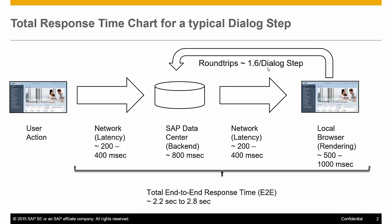For example, if it's a very short list it's one round trip; if it is a very long list, it can be multiple round trips. Which means the total end-to-end response time the user experiences is at least 200 milliseconds network latency, 800 milliseconds backend, 200 milliseconds back, and 500 to 1,000 milliseconds rendering. On average I can see in our system about 2.2 to 2.8 seconds — which also means the 800 milliseconds backend is just a third of the total response time. That third is under SAP's control; everything else is very much in your hands and we need to collaborate.